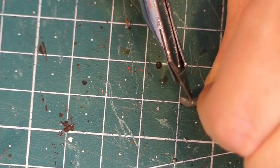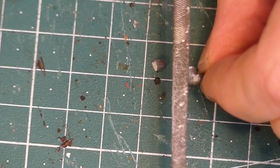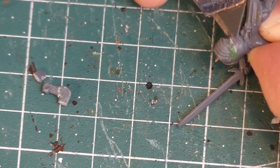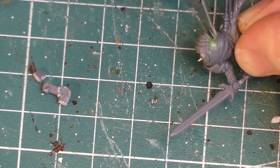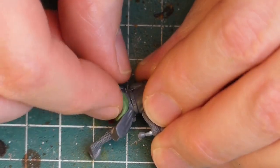While I'm waiting for the green stuff to harden I work with the new shield arm. I cut it off after measuring the right length and glue it to the shoulder. The last step is remodeling the part of the tabard because the knight will also ride on a Mongol horse.